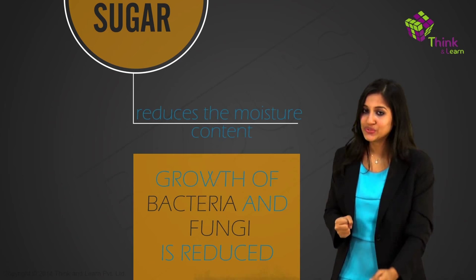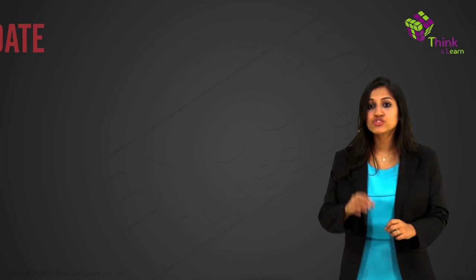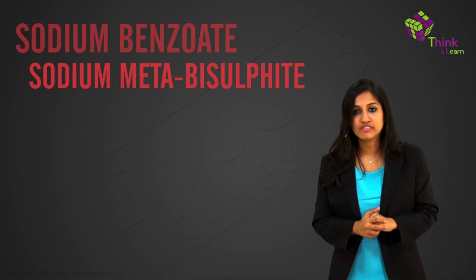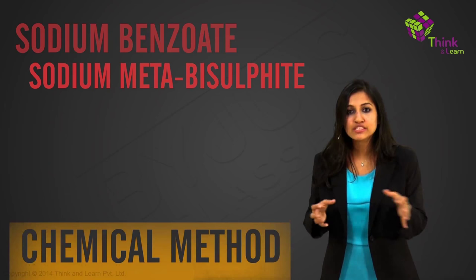And as an additional point, sodium benzoate and sodium meta-bisulphite are also commonly used preservatives. They are used in jams and squashes as well to check their spoilage. This is called the chemical method because you are using chemicals. You appreciate your lunch and start the journey back home.